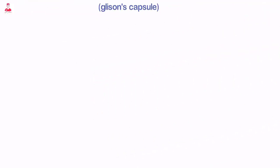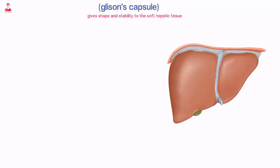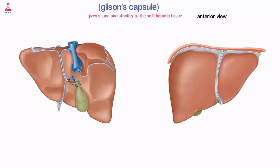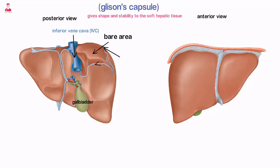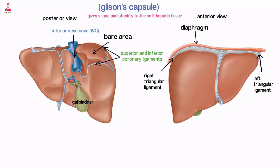The liver is surrounded by a strong connective tissue capsule — Glisson's capsule — that gives shape and stability to the soft hepatic tissue. It is entirely covered by peritoneum except for the gallbladder fossa, the surface opposed to the inferior vena cava, and the bare area, which is the liver surface between the superior and inferior coronary ligaments. The liver is attached to the diaphragm via the right and left triangular ligaments, which are extensions of the coronary ligaments.